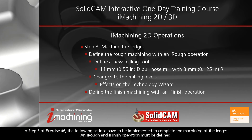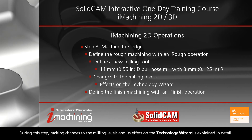In step 3 of exercise number 6, the following actions have to be implemented to complete the machining of the ledges. An iRough and iFinish operation must be defined. During this exercise, making changes to the milling levels and its effect on the Technology Wizard is explained in detail.